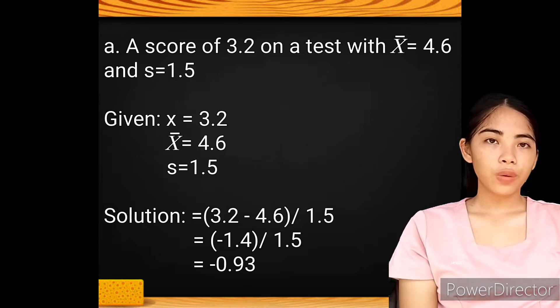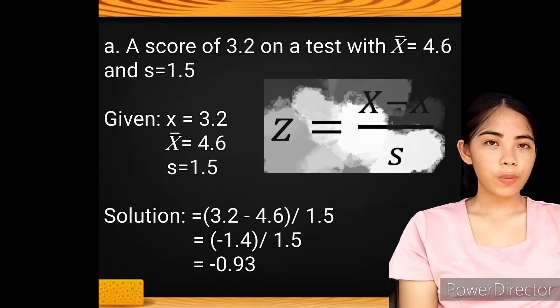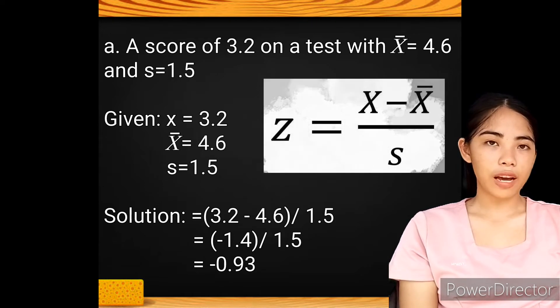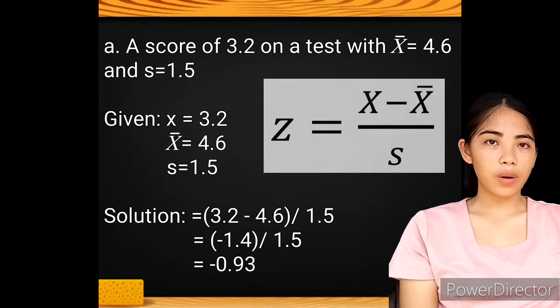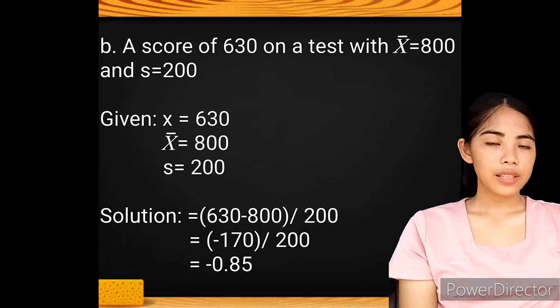We will substitute all these values into the formula. So 3.2 minus 4.6 divided by 1.5. 3.2 minus 4.6 equals negative 1.4. Negative 1.4 divided by 1.5 is negative 0.93.